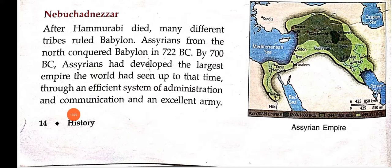After Hammurabi died, many different tribes ruled Babylon. Assyrians from the north conquered Babylon — they defeated the Babylonians around 722 BCE. The Assyrians built a very large empire. Their administration system was highly efficient, their communication system was excellent, and they had a strong army.